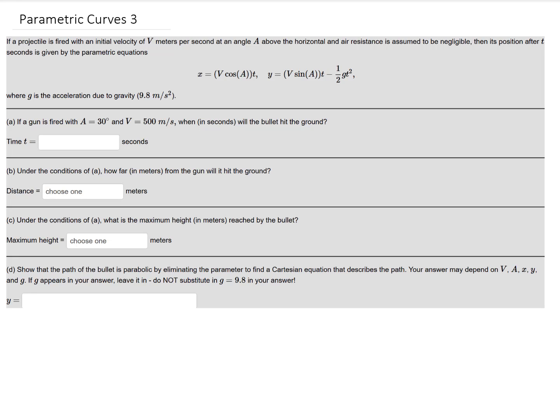Alright, so they give us a parameterized curve right here and they say that it represents the position of a projectile that's fired with an initial velocity v at an angle a above the horizontal. Let's check out the first question.